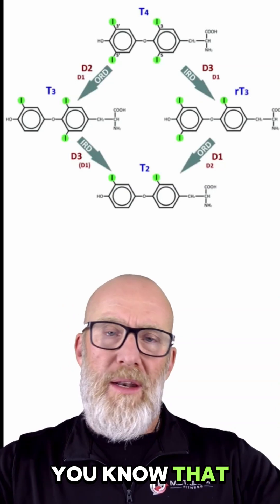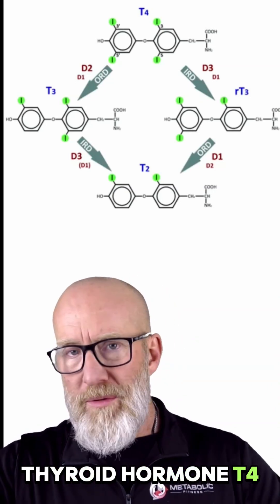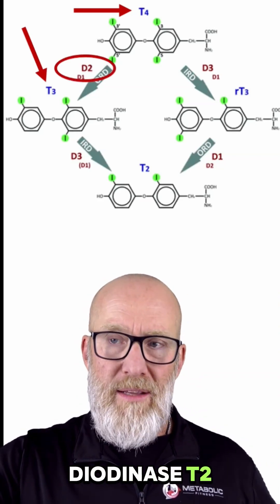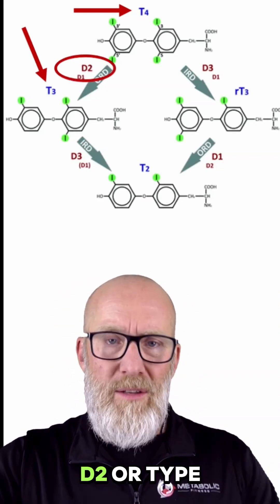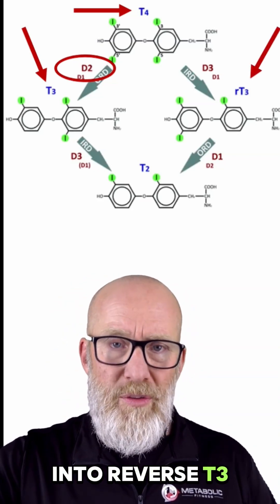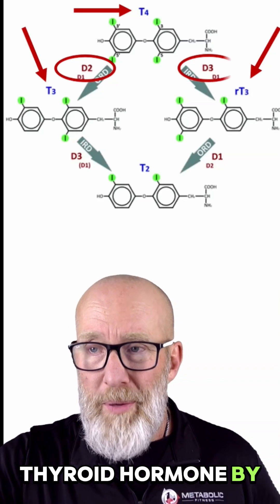You know that the thyroid makes thyroid hormone, T4 thyroxin. It gets converted to T3 by an enzyme called deiodinase T2. Now this is very watered down. D2 or type 2 deiodinase. It can convert into reverse T3, which is inactive thyroid hormone, by D3.